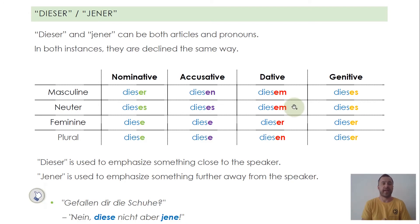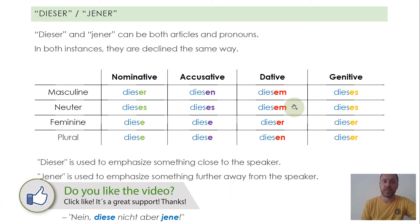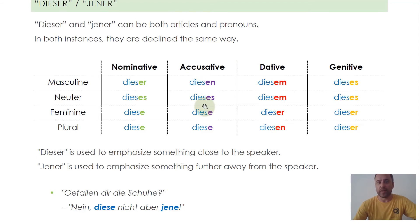We actually have 'this' and 'that' in German too, in a very similar use — the difference is you have to decline them. We have 'dieser' and 'jener' for 'this' and 'that.' You simply decline them like a definite article — exactly the same endings. So in nominative it's 'dieser, dieses, diese, diese' for masculine, neuter, feminine, and plural.